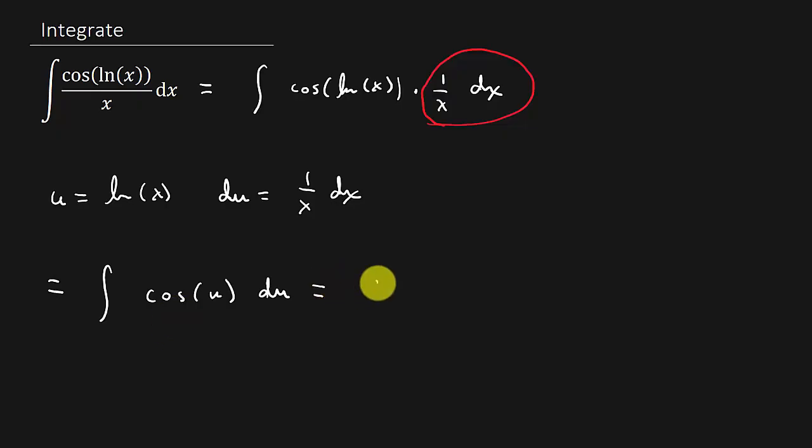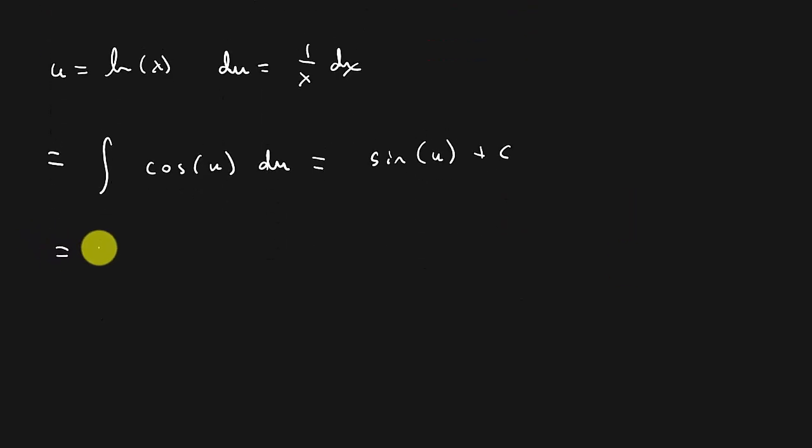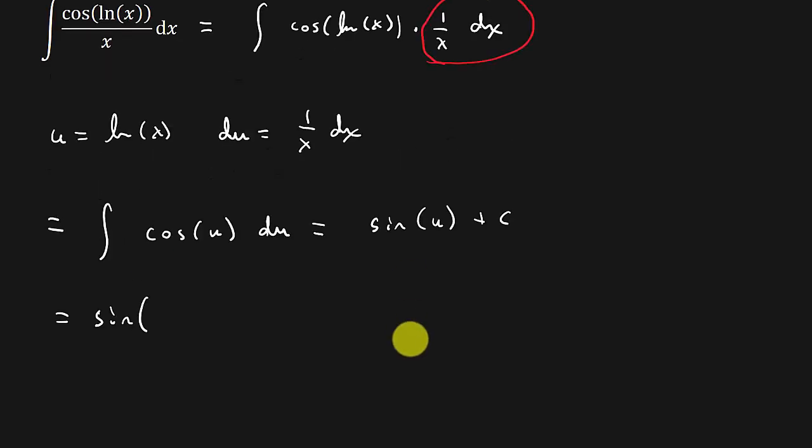So the integral of cosine is sine. Let's put the plus c. Don't forget that. And so now we've got the integral is equal to sine of u. u is natural log x plus c.